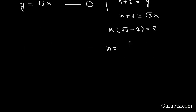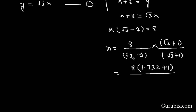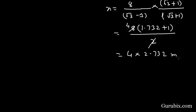Therefore x equals 8 over (root 3 minus 1). We shall rationalize by multiplying both numerator and denominator by (root 3 plus 1). The numerator becomes 8(root 3 plus 1) and the denominator becomes 2. Cancelling 2 with 8, we get 4 times (root 3 plus 1). Since root 3 is 1.732, this equals 4 times 2.732, which is 10.928 meters.